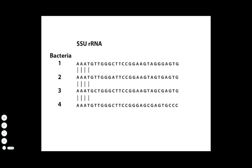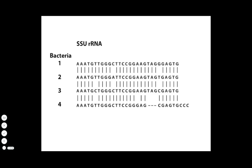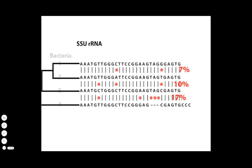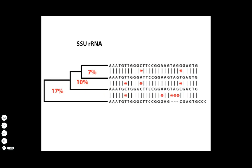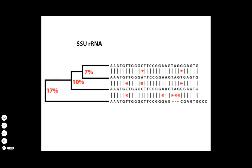First, the gene sequences must all be aligned, which is typically done by a computer. The differences between the sequences are tallied. Two of the sequences differ by just two bases, a 7% difference. Comparing either of these closely related sequences to the others shows a greater divergence. The most closely related are grouped together, and the more divergent are grouped accordingly. The length of each branch in the tree is given by the divergence, or percentage of base positions that differ between two organisms.